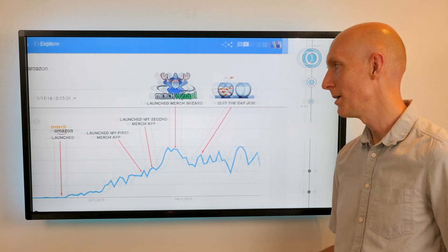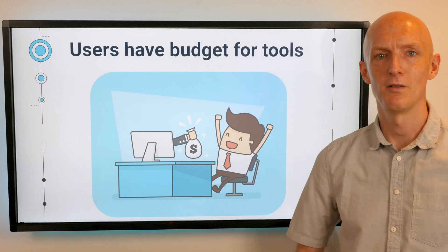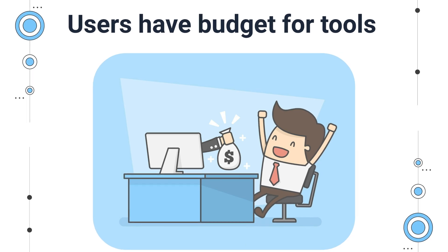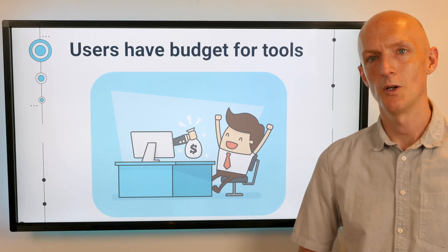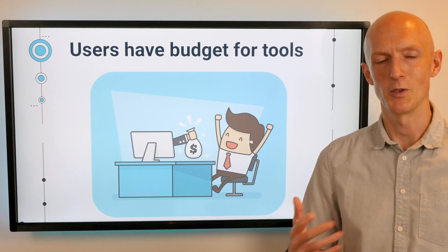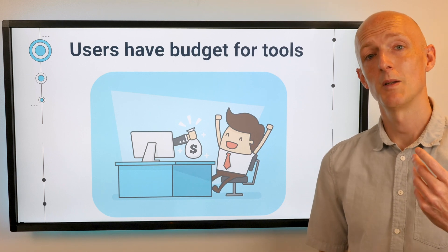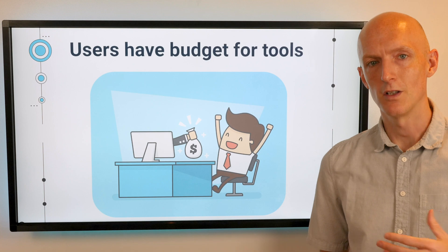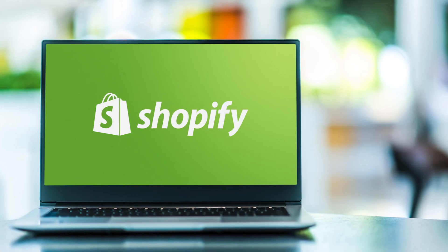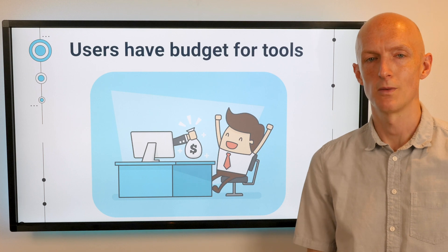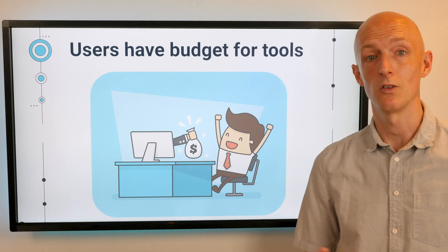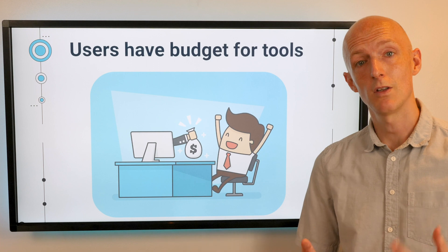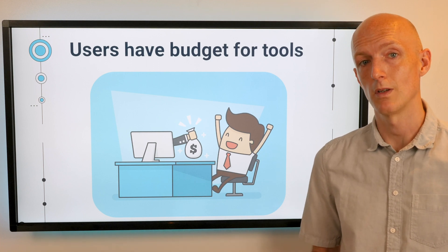Next: users have got to have a budget for tools in that niche. You may have spotted a fantastic opportunity in a booming industry, but if the people within it don't have any money to spend, it won't be a great opportunity to build a micro SaaS in. We want to target people who have both the willingness and the ability to spend on the tools we're offering — ideally businesses or at least people who make money from the activity in that niche. There's no use building a tool for a hobbyist market where people are unlikely to spend money.